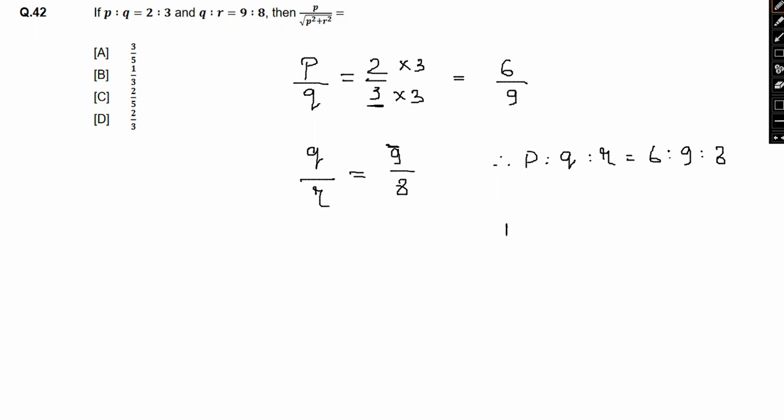So therefore if we take a look at the expression p by root under p square plus r square, that would be p is 6 by 6 square plus 8 square. So 36, 64, so this is 6 by 10 or 3 by 5 which will be the answer. Option A.